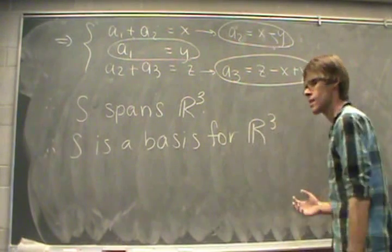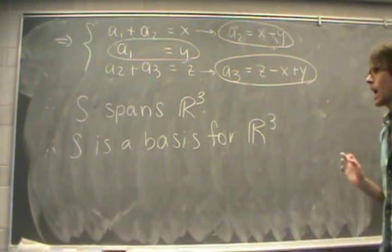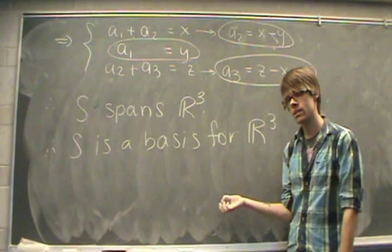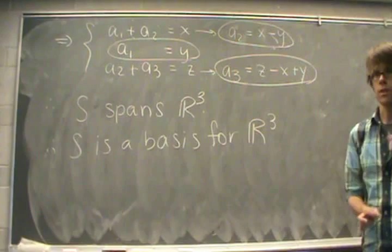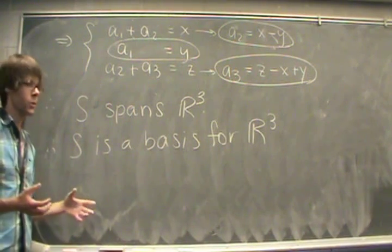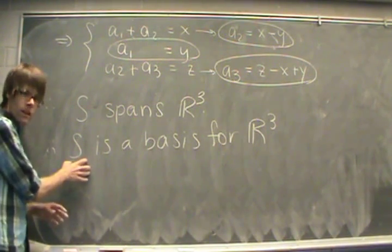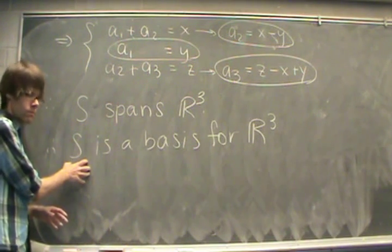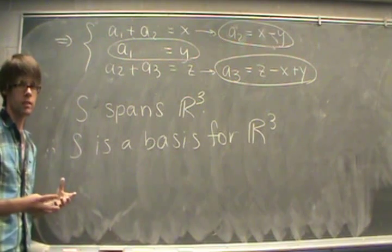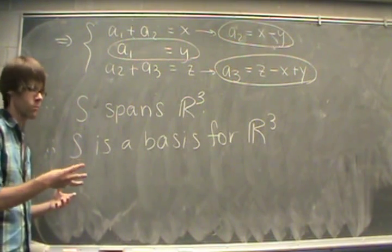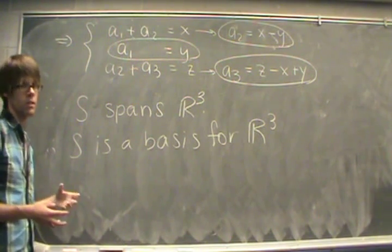Because S is linearly independent and S spans all of R^3, we say that S is a basis for R^3. What I do want you to notice is how many vectors are in S? Three. What did we say the dimension of R^3 was? Three. Not a coincidence.